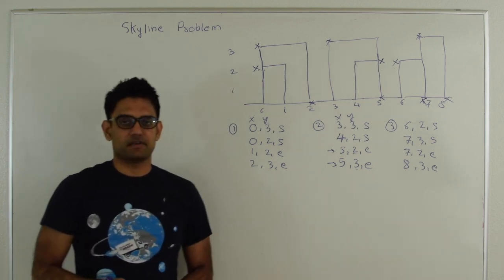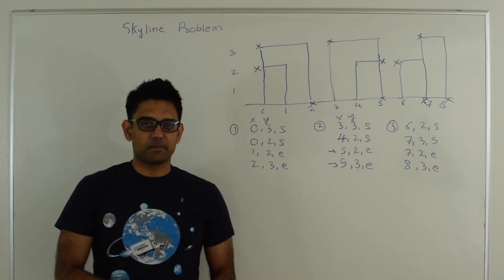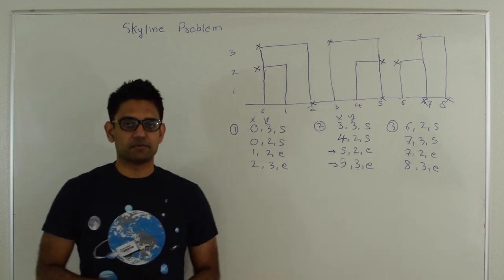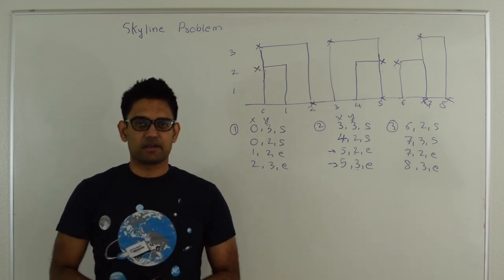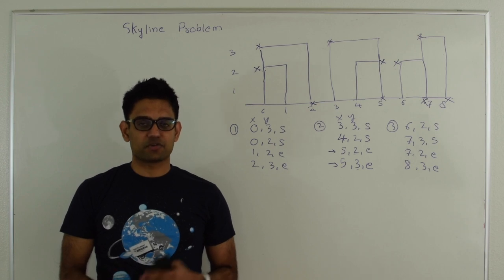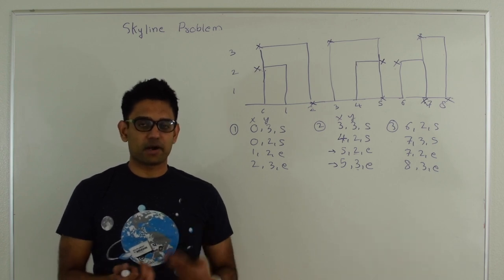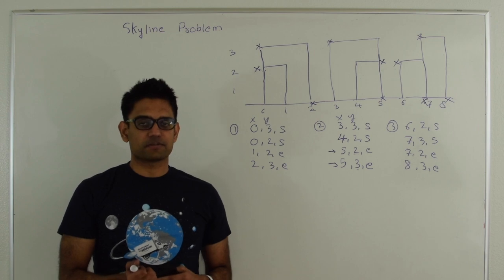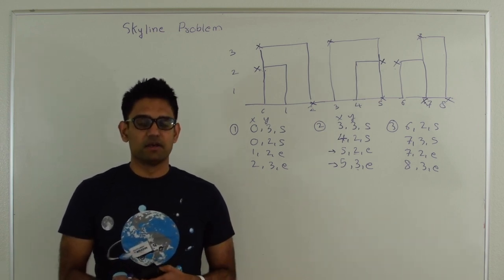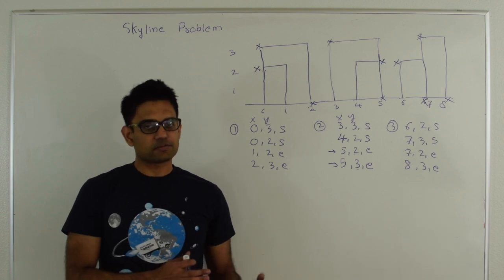The basic operations are adding an element to a priority queue, removing an element, or looking at the max value — each done 2N times total for N buildings. If all three operations run in O(log n) time, the total time complexity is O(n log n). Most priority queues support add and find-max in O(log n), but removing is typically not O(log n). So either write your own priority queue, or in Java use a TreeMap, which supports all three operations in O(log n) time.